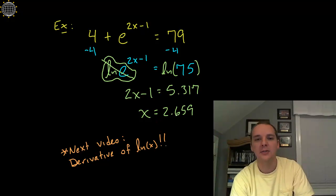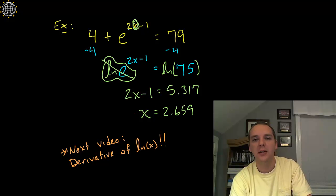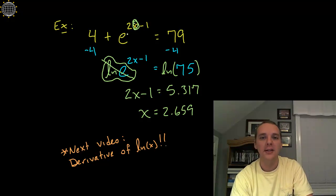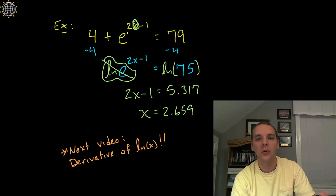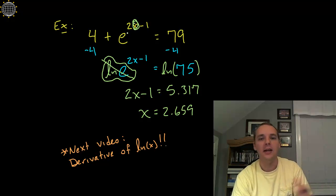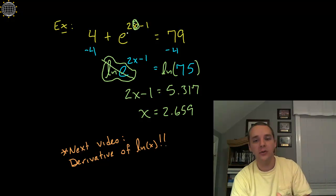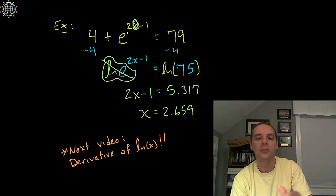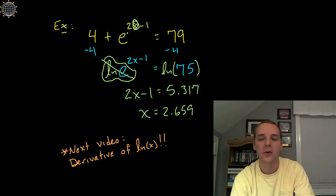Now what is x = 2.659? Well, that's the x value such that if you plugged it in here for x and you doubled it and subtracted 1 and raised e to that quantity and added 4, the quantity would be 79. So it's just the solution of the equation, but just along the way at some point you'll have to use logarithms to negate any exponentials. And if this equation had logarithms in it, we would need an exponential to negate the logarithm. So they complement one another in that way.